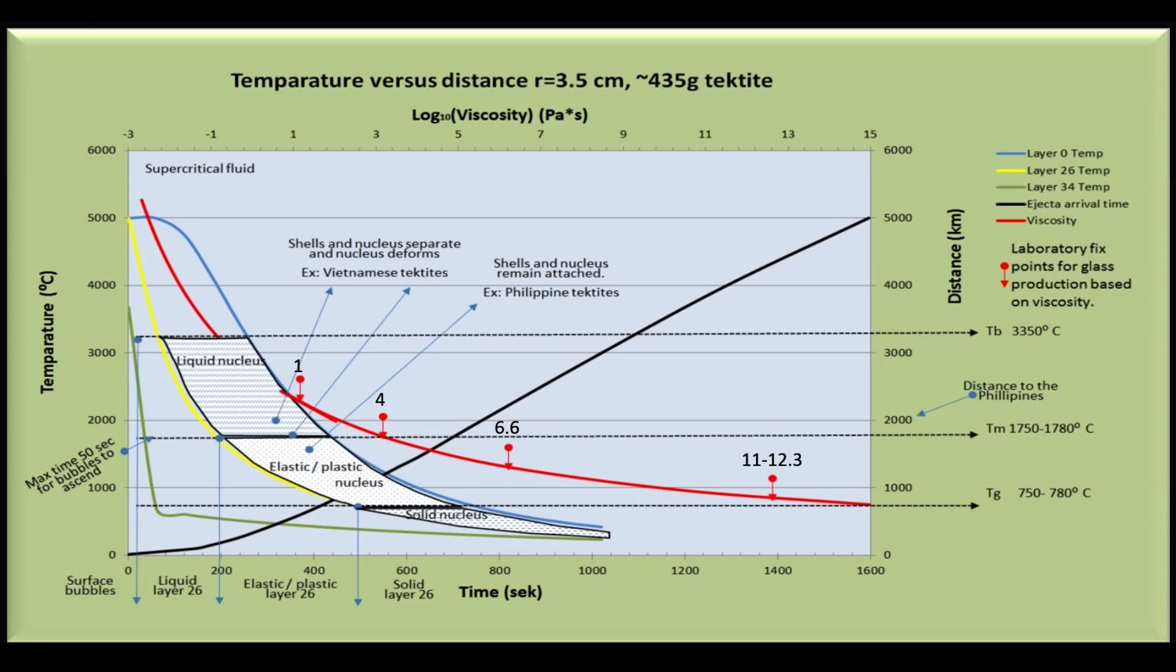This graph shows results from modeling the cooling of a splash form sphere of radius 3.5 centimeters, assuming only the top layer cools by radiation while inner layers cool by conduction. Read the chapter for detailed explanations.